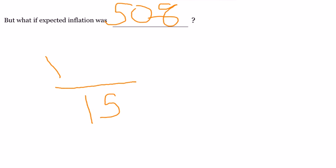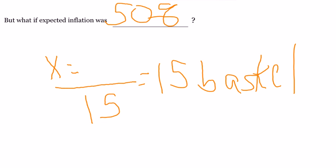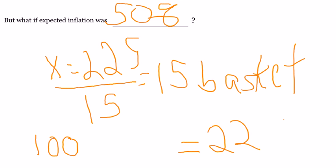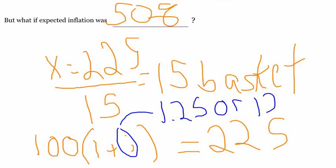And we want to know how much we're going to repay, and we want whatever this is to equal 15 baskets. Well, then we know that we must repay $225, because 225 divided by 15 is 15 baskets. Well, what this implies is that we borrowed $100, we repaid $225, and so what was the nominal interest rate that achieved this? The answer is 1.25 or 125%.